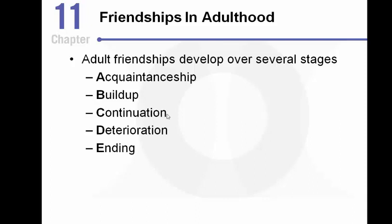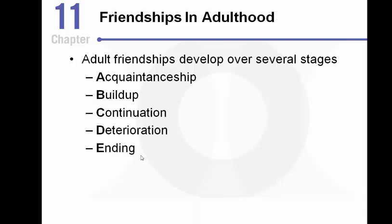Whatever continuation looks like for a particular relationship, you maintain it. Of course we'd like to have lifelong friends, but some friends come and go in our lives — perhaps we're moving to different places or in different stages of life when it comes to things like marriage or kids. Sometimes there is a deterioration where you gradually drift apart, kind of the opposite of the build-up, until eventually you're just not particularly close friends anymore. Maybe you keep in contact through social media, but you wouldn't call yourselves friends. We cycle through friendships throughout our lives.